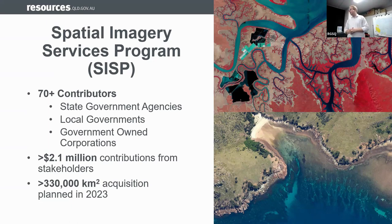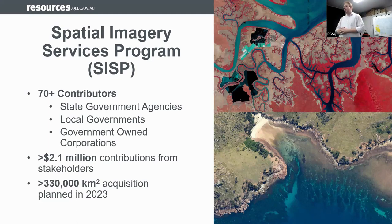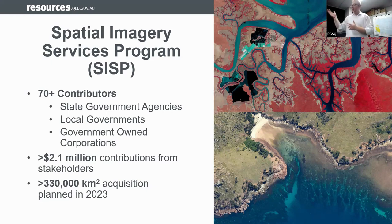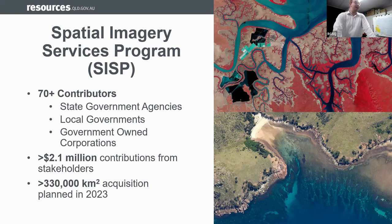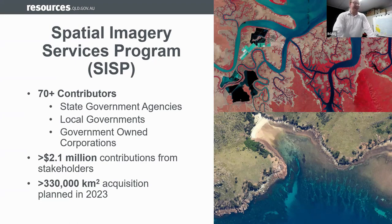CISP is our primary program. It has over 70 contributors from state government agencies, local governments, government-owned corporations, and even a few startups, all of whom put in a share of money to make the overall program work. Collectively we get about $2.1 to $2.5 million in contributions, so for an investment of maybe $50,000 to $100,000, agencies are getting more than $2 million worth of value. In 2023 this program is capturing more than 330,000 square kilometres of Queensland, out of a total land area of around 1.9 million square kilometres.